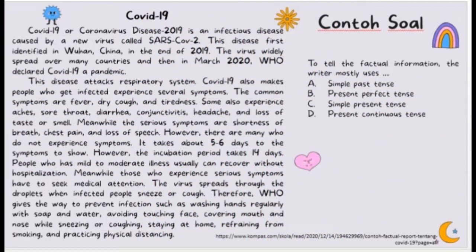Third: to tell the factual information, the writer mostly uses — A: simple past tense; B: present perfect tense; C: simple present tense; D: present continuous tense. The right answer is C, simple present tense. Remember that in report text, overall, the text uses simple present tense.